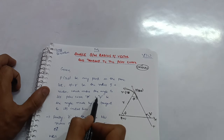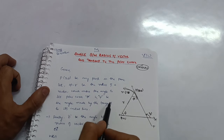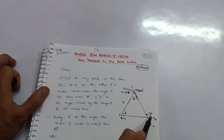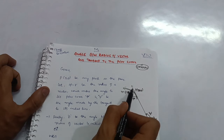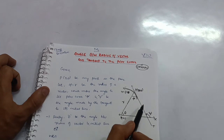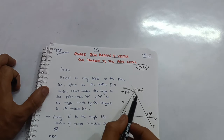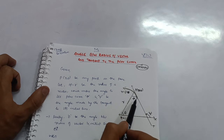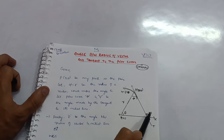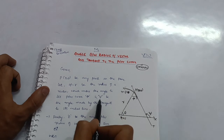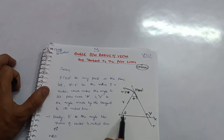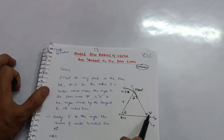Let φ be the angle made by the radius vector with the polar curve, and let ψ be the angle made by the tangent to the curve with the initial line OX. A tangent is a line that meets the curve at exactly one point.